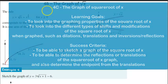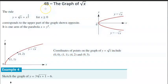First things first, there has been a bit of an error when creating this task. This is actually exercise 4c, not 4p. So go ahead and change this to 4c — the graph of the square root of x.